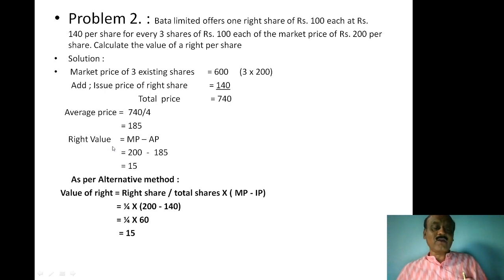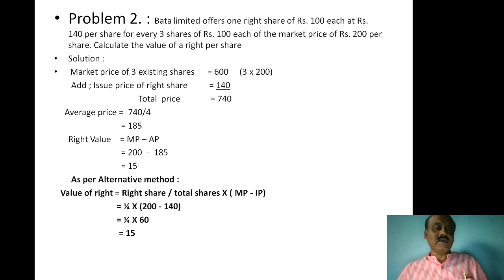Step 2: Value of right equals market price minus average price. Market price is ₹200, average price is ₹185. So ₹200 minus ₹185 equals ₹15. The value of right is ₹15.